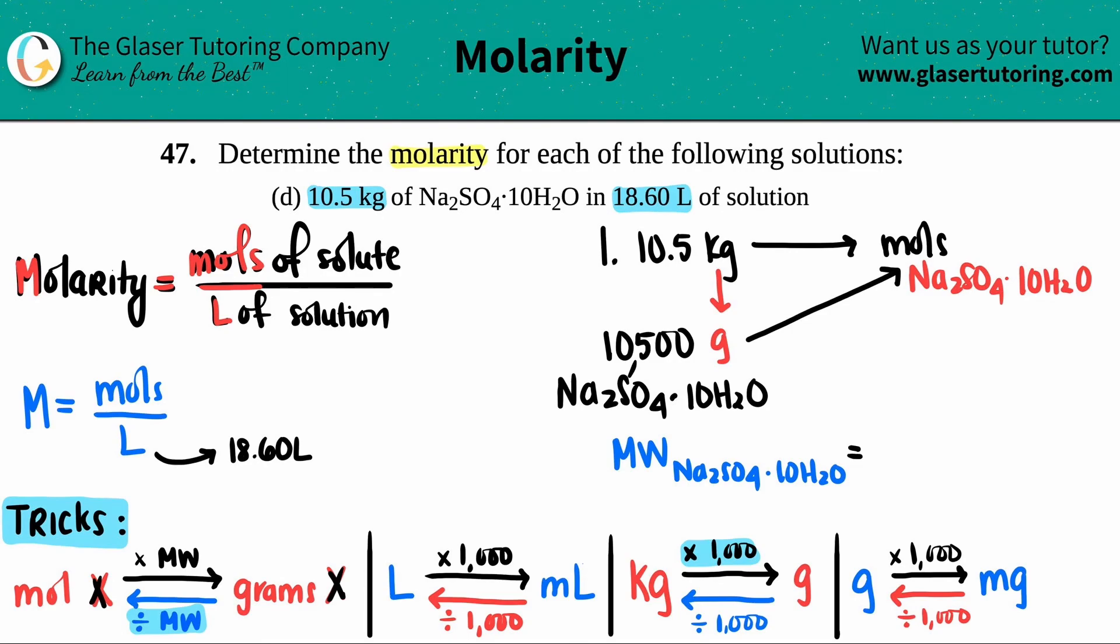We've done tons of molecular weight problems - we just look on the periodic table and count them up. You have two sodiums here, you have one sulfur, you have four oxygens, and then you have 20 hydrogens and 10 oxygens. You need to add all of those up.